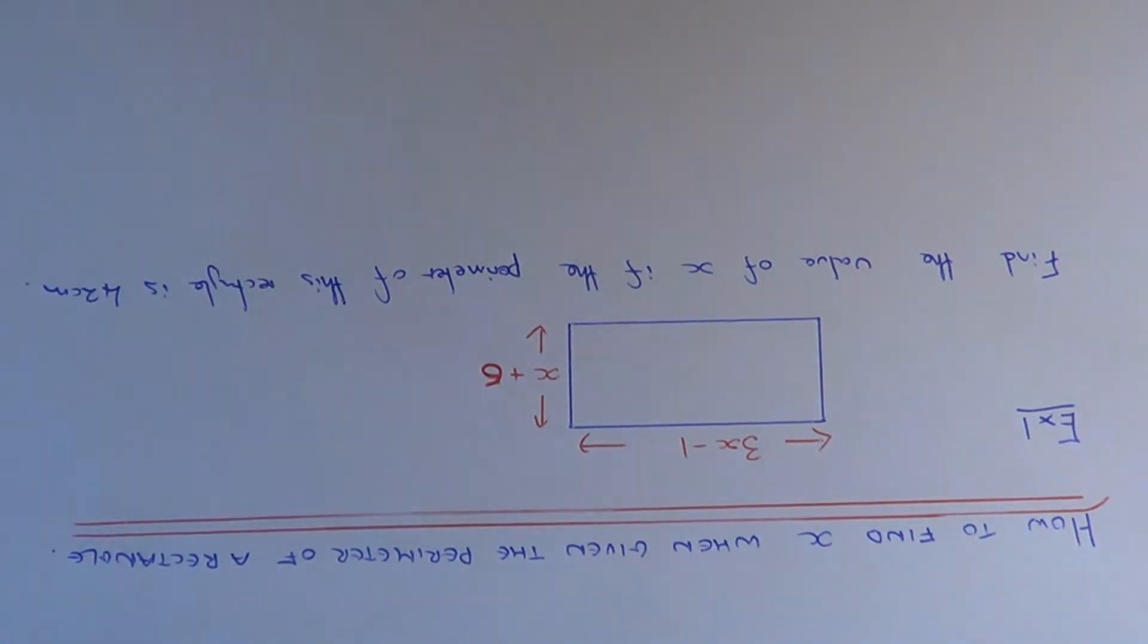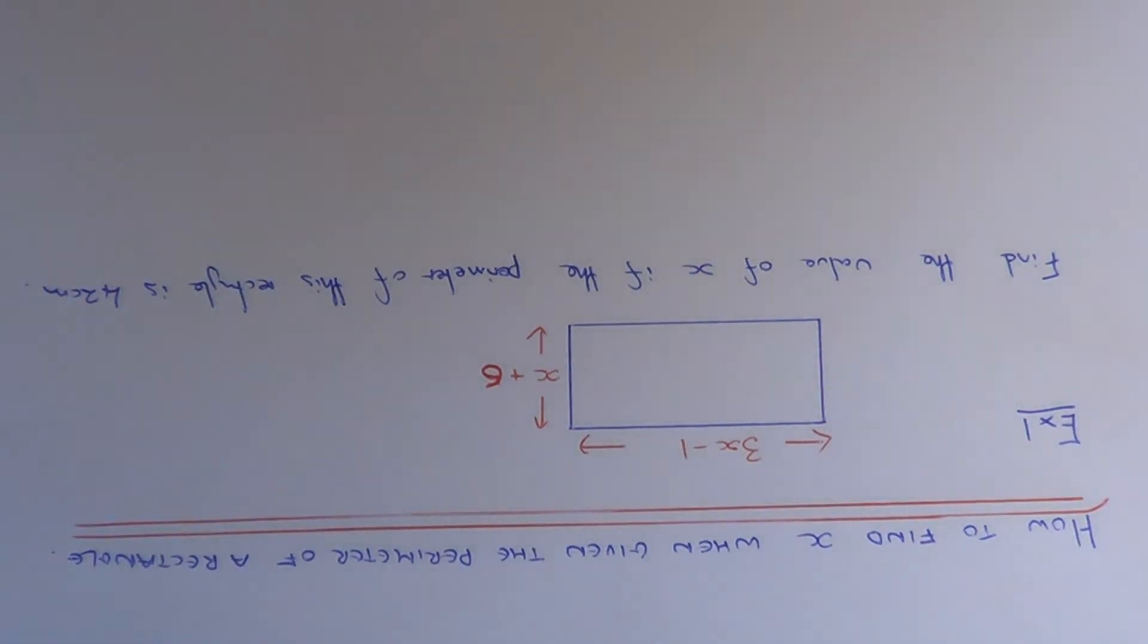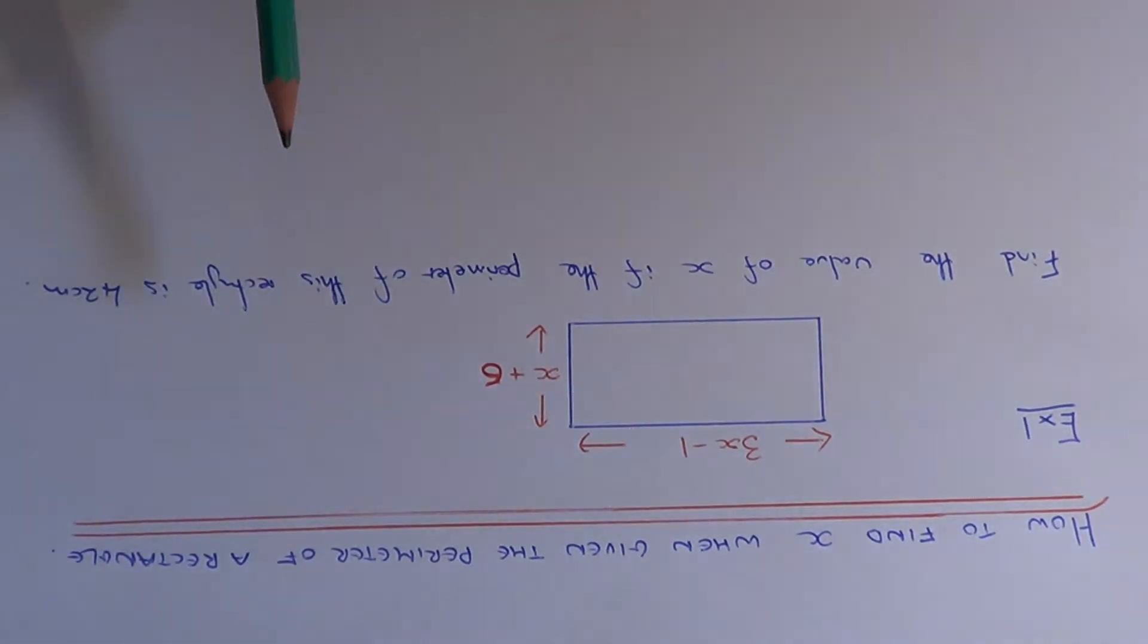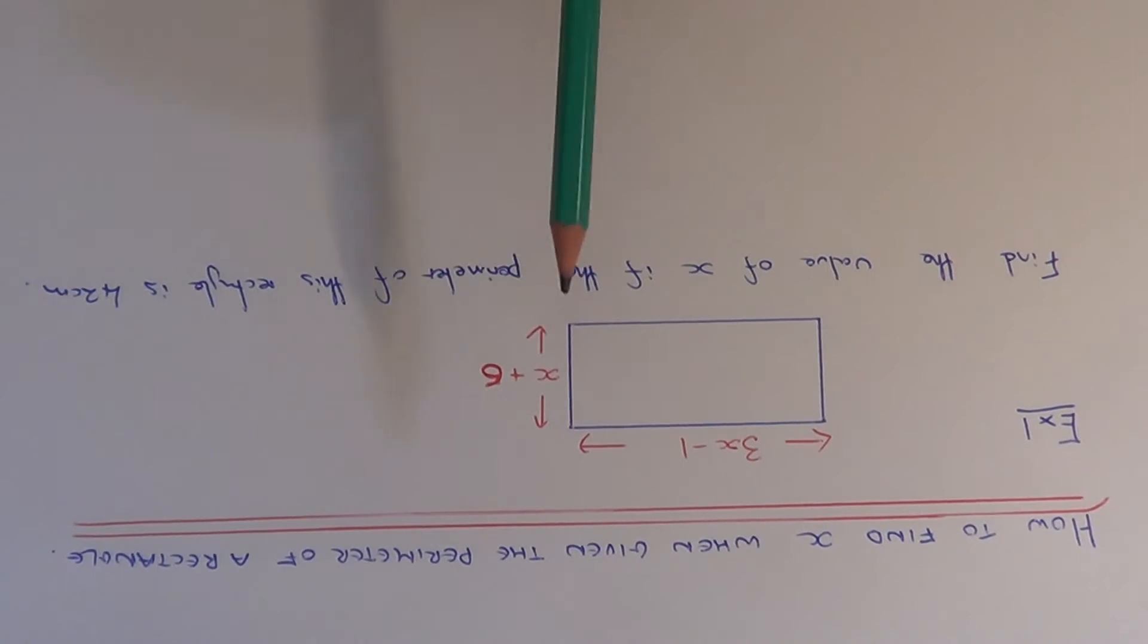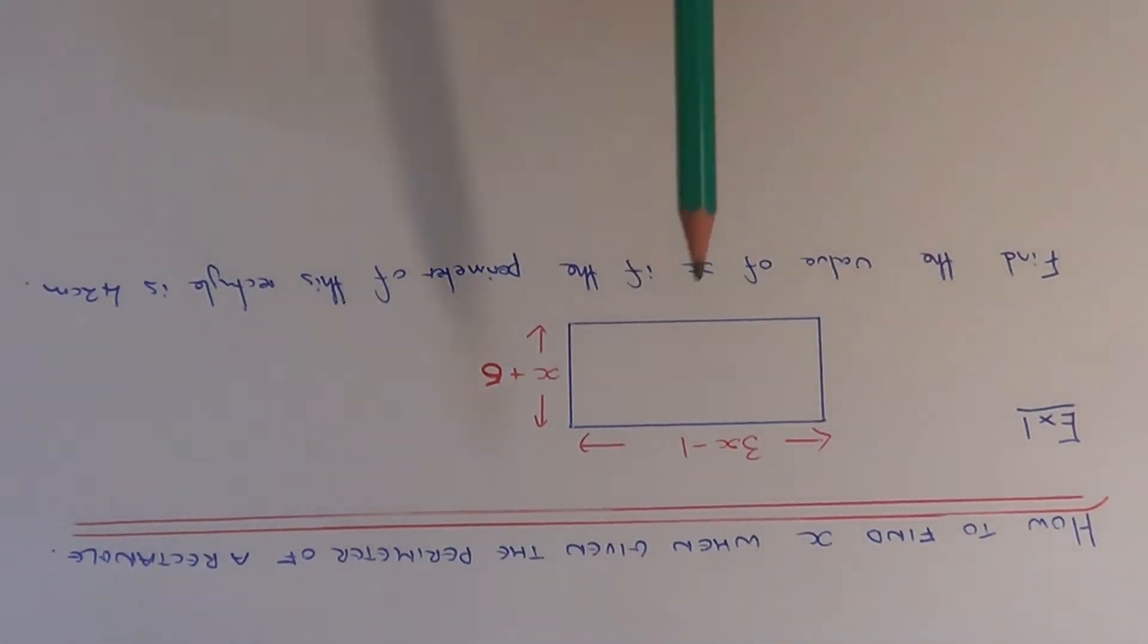Today I'm going to show you how to find the value of x if you're given the perimeter of a rectangle and all the sides are given in terms of algebra. So let's have a look at our example here.